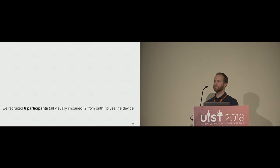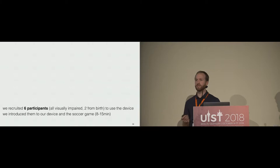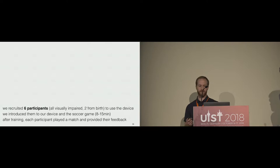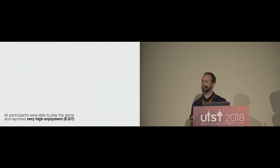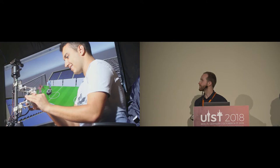To evaluate Dual Panto, we recruited six participants, all of whom were visually impaired — two from birth. We introduced them to the device and the soccer game, a process that took about 8 to 15 minutes. After training, each participant played a match and provided feedback. All participants were able to play the game and reported very high enjoyment — 6.5 out of 7.